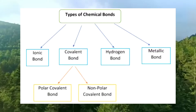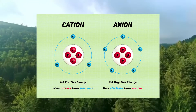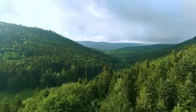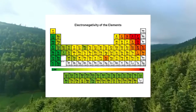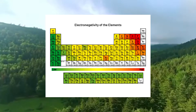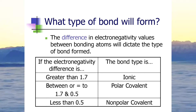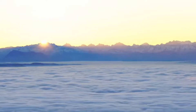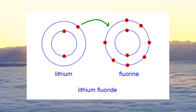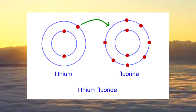An ionic bond is a bond between cations and anions. Cations are positively charged atoms, while anions are negatively charged. You can tell if a bond between two atoms will be an ionic bond depending on the difference in electronegativity between the atoms. An atom's electronegativity is the ability of an atom to attract electrons from another atom. If the difference is greater than 1.7, then it's an ionic bond. In ionic bonds, atoms completely give up electrons to other atoms. An example of an ionic bond is lithium fluoride — the lithium atom gives up its only valence electron to the fluoride atom.